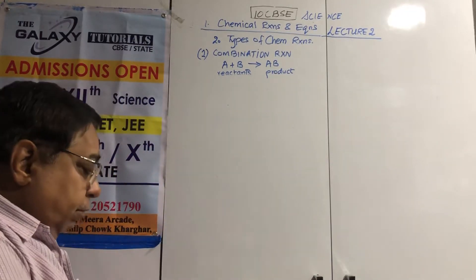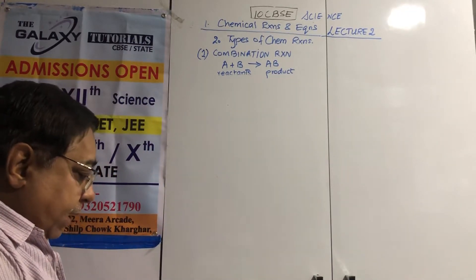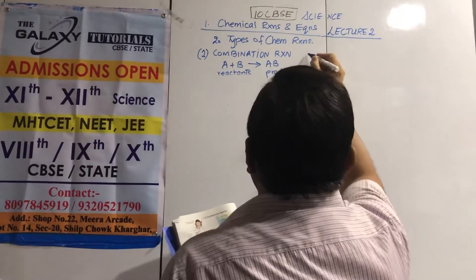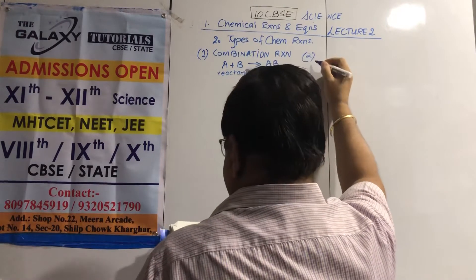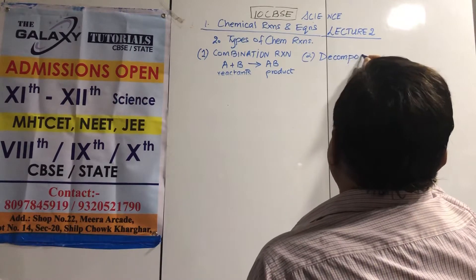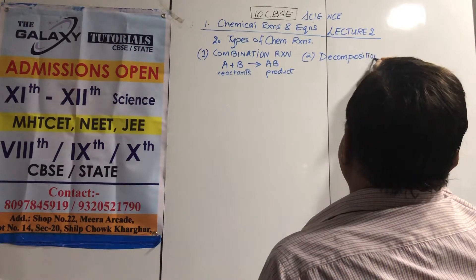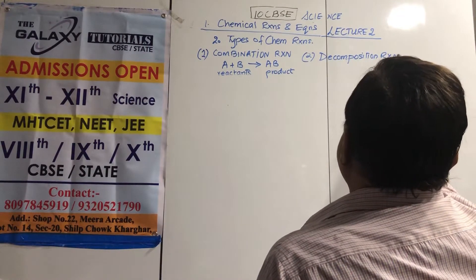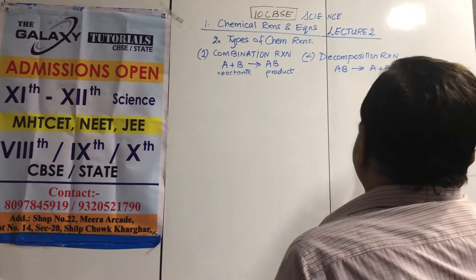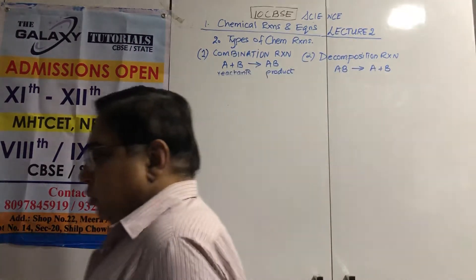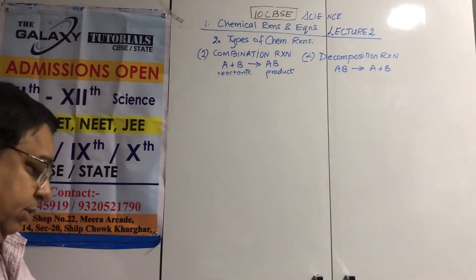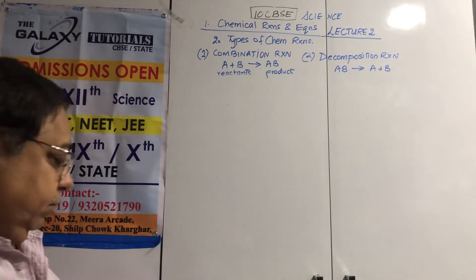Now, type number 2: decomposition reaction. It is the opposite of combination reaction. A single compound will break down into 2 or more products.